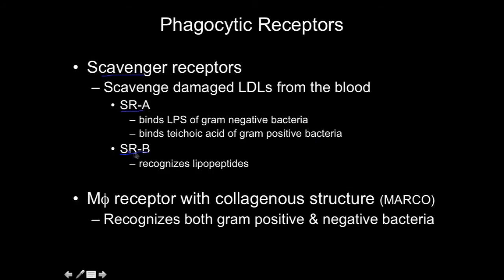SRB only recognizes lipopeptides. SRA also binds lipoteichoic acid. We also have MARCO — macrophage receptor with collagenous structure — which recognizes both gram-positive and gram-negative bacteria. One notable feature is that MARCO holds its binding domain very far from the host cell membrane, extending far out from the extracellular surface.